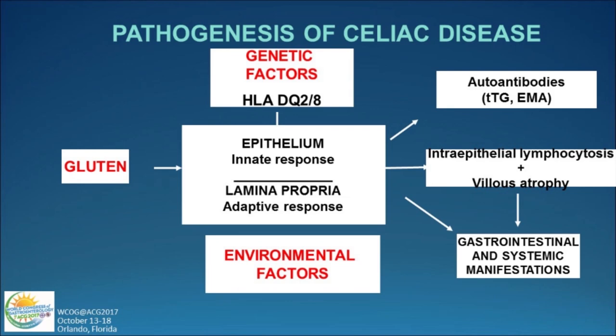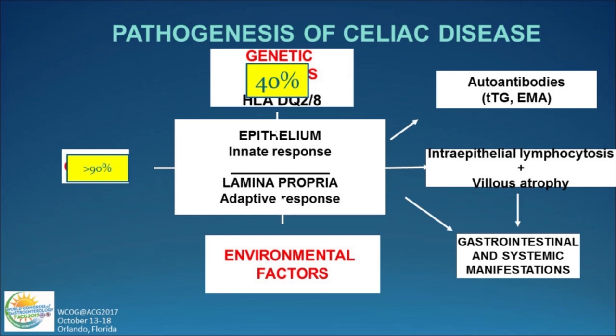Why do we get celiac disease? There are genetic factors — one has to have HLA-DQ2 or DQ8, which occurs in about 30 to 40% of Caucasian populations, but there are approximately 30 other genes incriminated in certain populations. There are genetic determinants, and then we've got to be eating gluten. Currently about 98% of people in this country eat gluten, so environmental factors are probably very important.